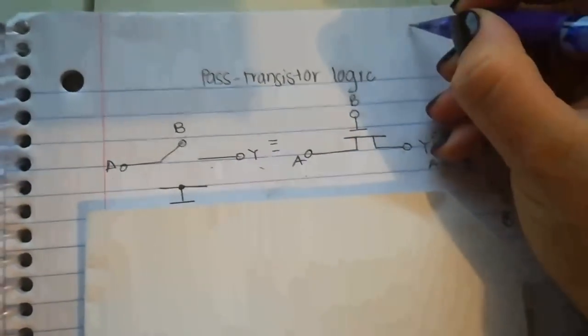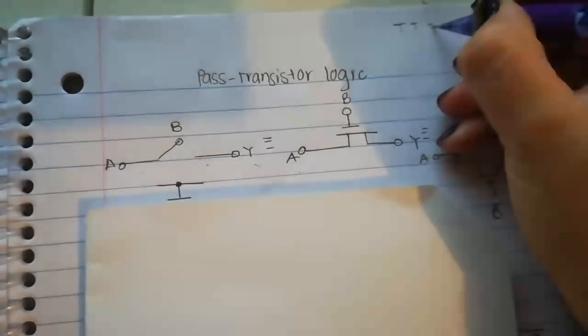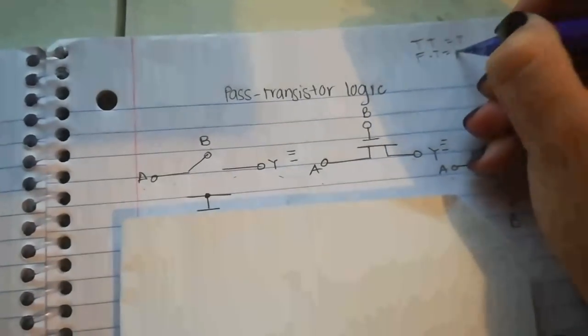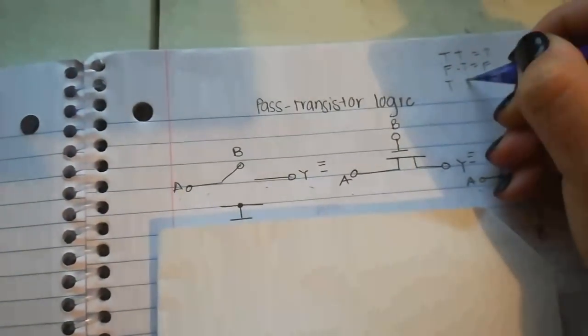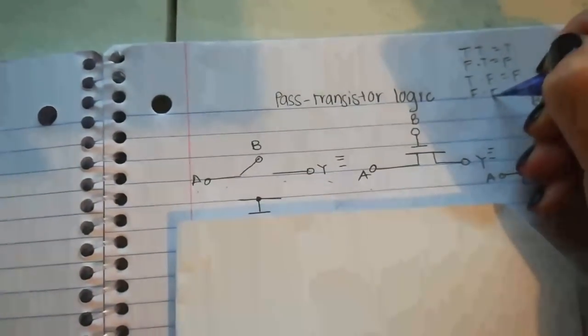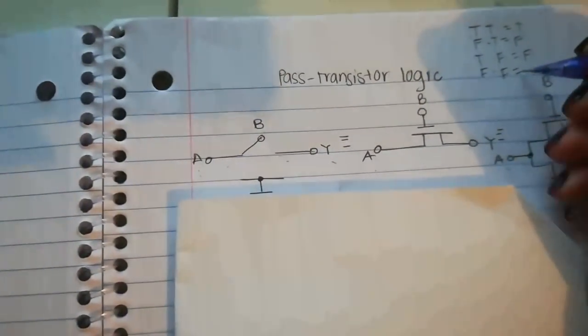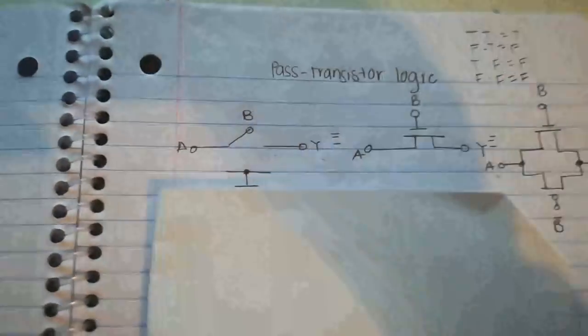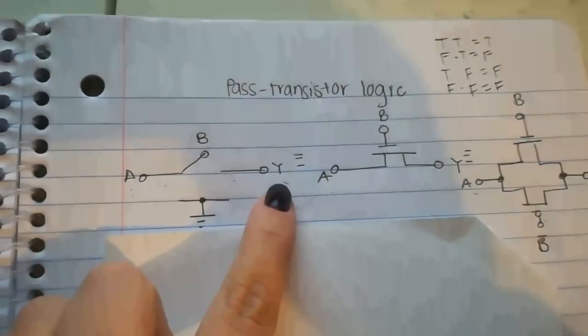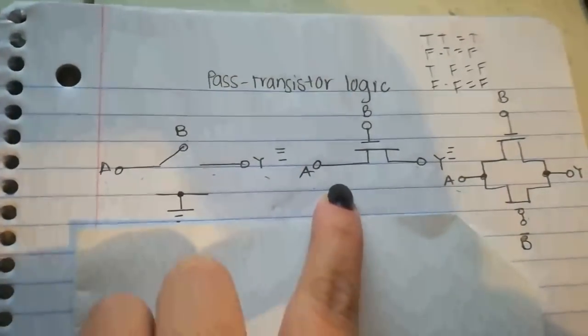Why? Because in the truth table for an AND expression: true times true equals true, false times true equals false, true times false equals false, and false times false equals false. So unless both of them are passing a logic one, Y is gonna be 1.